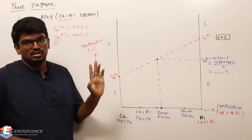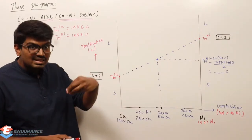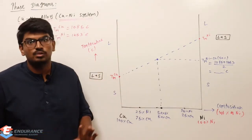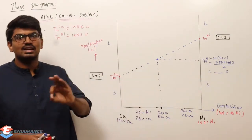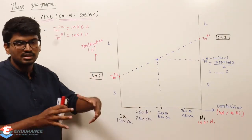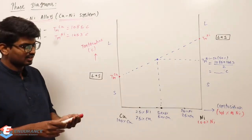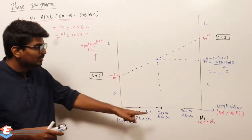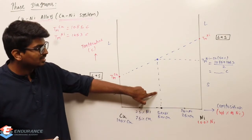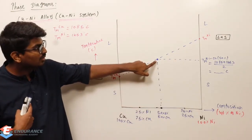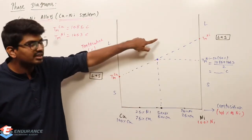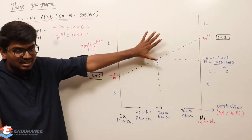If I take 50% nickel and 50% copper, our expected melting point of this nickel-copper mixture is the average of the melting points of pure nickel and pure copper. But reality is completely different when I do the experiment. As I am supplying heat with 50% nickel and 50% copper, our expectation is that at the average temperature it will start converting into liquid — until that point it will be solid, and after that point it will be liquid. But reality is different.